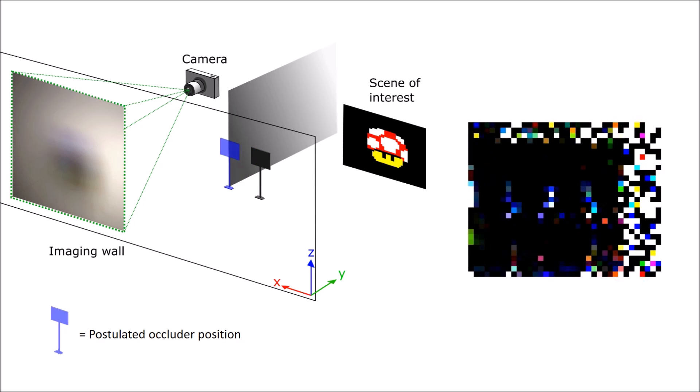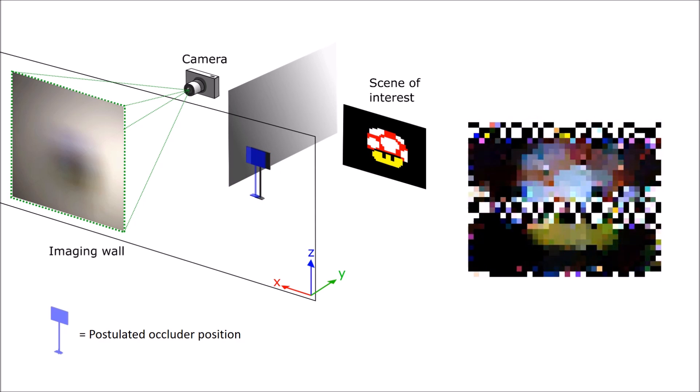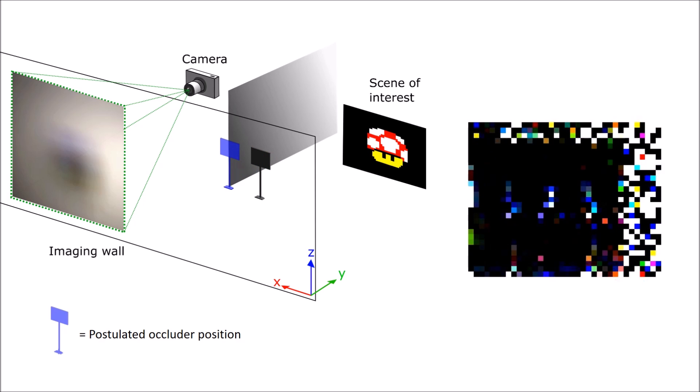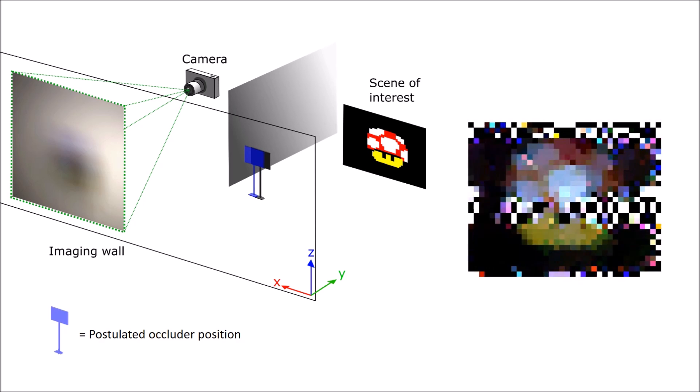Here we see different shifts in the transverse or X position of our postulated occluder and the effect this has on the reconstruction. We leverage this phenomenon in the final reconstruction algorithm.